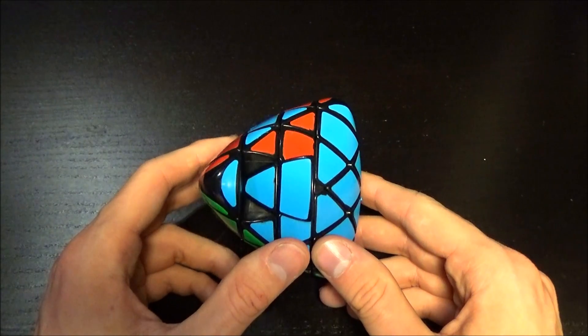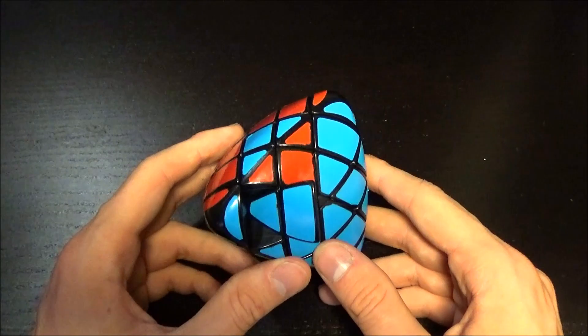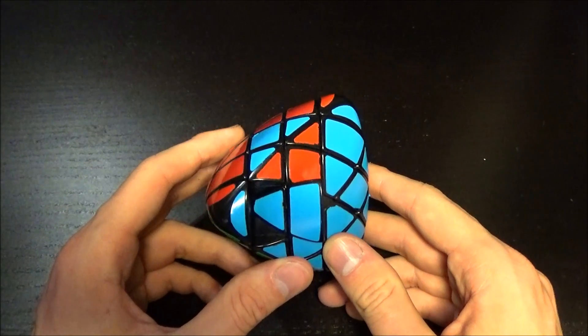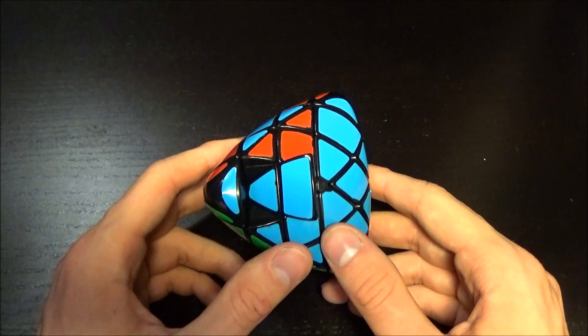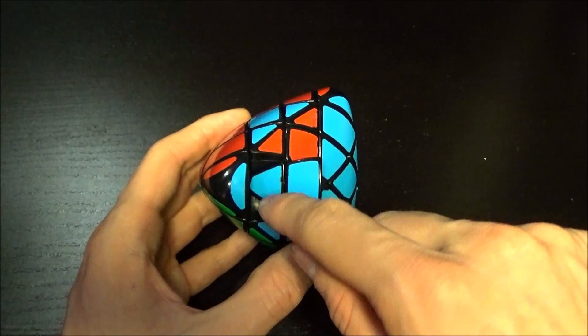This is actually the same parity you can get on the regular 4x4. There are plenty of different algorithms you can use for this parity, but I prefer the following one because I used this one since I cubed the normal 4x4. Hold the puzzle like this, that you have the edge pair one to flip in front of you.